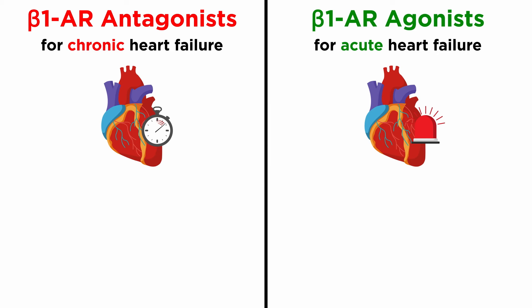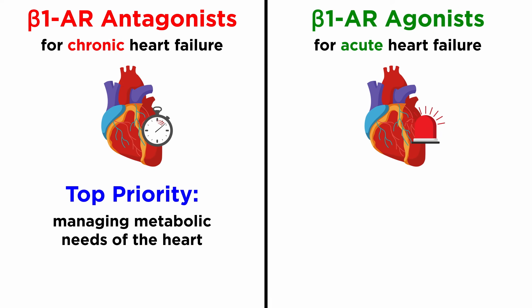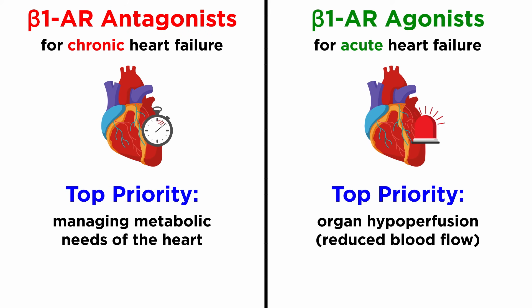The rationale for the seemingly counterintuitive treatment strategies of using beta blockers for chronic heart failure and beta agonists for acute heart failure is that in chronic heart failure, managing the metabolic needs of the heart is the objective of treatment, whereas in acute heart failure, organ hypoperfusion needs to be prioritized — meaning getting more blood to all the organs is the top priority — and the metabolic needs of the heart are generally managed with antihypertensive drugs and diuretics.